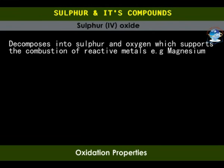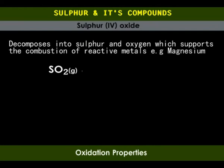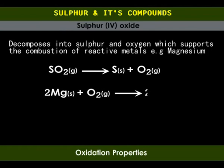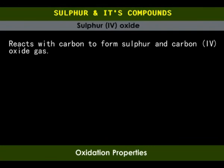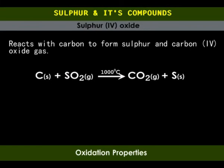When a burning magnesium ribbon is placed in a gas jar of sulfur dioxide, it continues to burn. A mixture of white magnesium oxide and yellow sulfur is deposited in the jar. Sulfur dioxide gas does not burn nor support combustion; however, the heat from the burning magnesium decomposes it into sulfur and oxygen, and magnesium continues to burn in the oxygen, forming magnesium oxide. If a mixture of carbon and sulfur dioxide gas is heated to about 1000 degrees Celsius, carbon dioxide and free sulfur are formed. This reaction is used to obtain sulfur from industrial fuel waste.